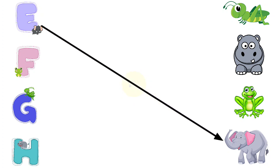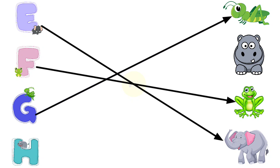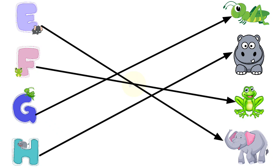E for elephant, F for frog, G for grasshopper, H for hippo.